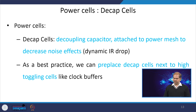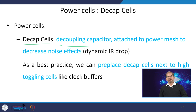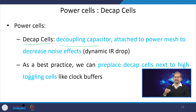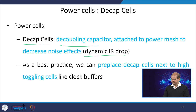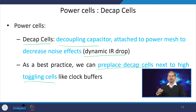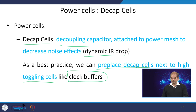Decaps are decoupling capacitors connected to the power supply mesh. Since they are connected to the power supply mesh, they reduce external noise and also reduce dynamic IR drop. It is best practice to place decaps next to high-toggling nets — for example, next to clock buffers — to reduce variation.